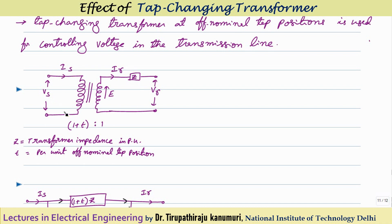Let us take a tap changing transformer represented in a per-unit diagram. Z is the per-unit impedance referred to the secondary side. At the receiving end, the current is Ir, receiving end voltage is VR, and the generated voltage on the secondary side is E. The primary side voltage and current are VS and IS. Because the tappings disturb the nominal ratio, I represent that change by T, where T is the per-unit of nominal tap position, and Z is the transformer impedance in per unit.